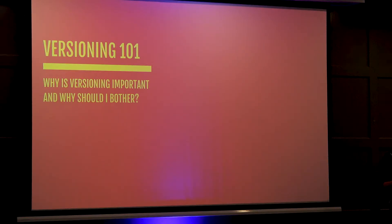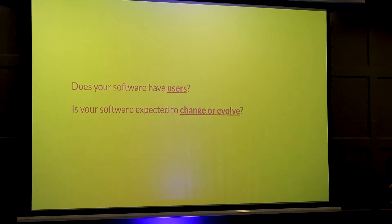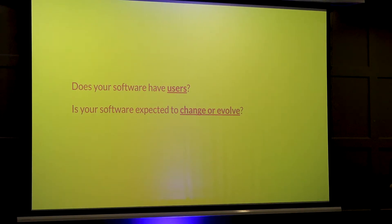Starting from the top: versioning 101 — why is it important and why should it matter? If you're writing a project, it usually falls into one of two categories: it's a service, like a web service, or it's a library. If it's a service, versioning is maybe less important outside of debugging customer issues. If it's a library, versioning is absolutely crucial for dependency management. If your project is never going to change or evolve, you don't need to worry about a version — but pretty much everything has bugs and new feature requests.